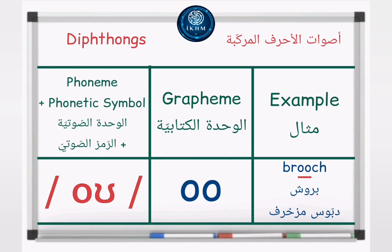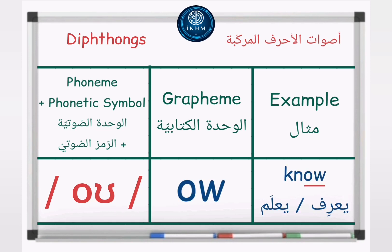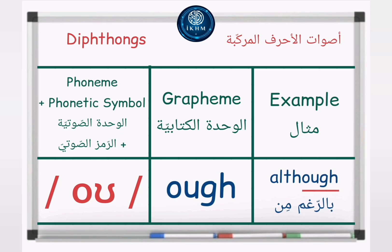Grapheme: letters O, O. Example: Broach — /oʊ/ — Broach. Grapheme: letters E, W. Example: Sew — /oʊ/ — Sew. Grapheme: letters O, W. Example: No — /oʊ/ — No. Grapheme: letters O, U, G, H. Example: Although — /oʊ/ — Although.